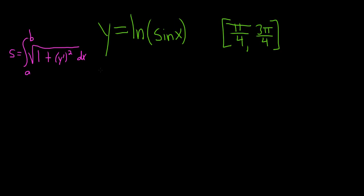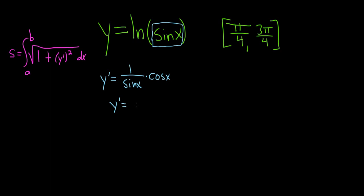We'll start this problem by finding the derivative of y. So y prime: the derivative of the natural log of x is 1 over x. Here it's the natural log of sine of x, so it's 1 over sine of x times the derivative of the inside — we're using the chain rule. The derivative of sine is cosine, so this equals cosine over sine, which is cotangent of x.